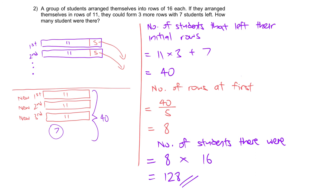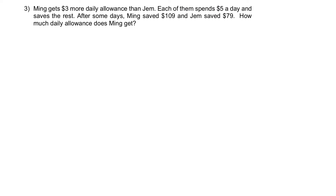Question 3. Ming gets $3 more daily allowance than Jam. Each of them spends $5 a day and saves the rest. After some days, Ming saved $109 and Jam saved $79. How much daily allowance does Ming get? We have to recognize the relationship: given that each spends the same amount, this additional $3 will be the additional savings that Ming has more than Jam per day.